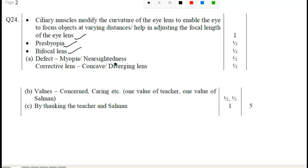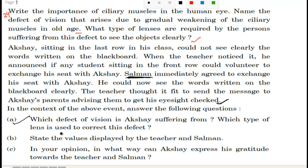The defect is myopia, or nearsightedness, and the corrective lens is a concave lens, also called a diverging lens.